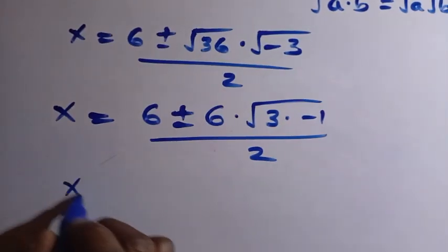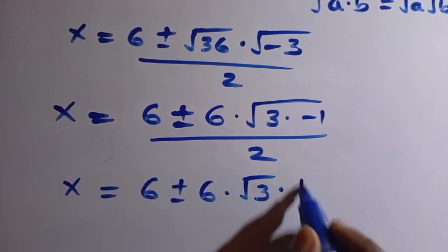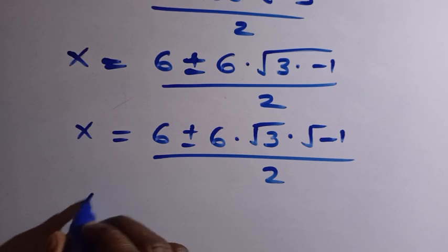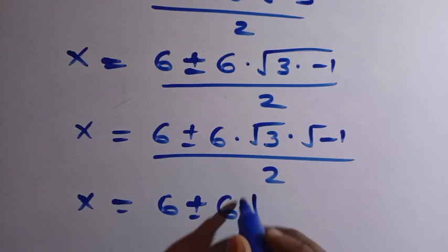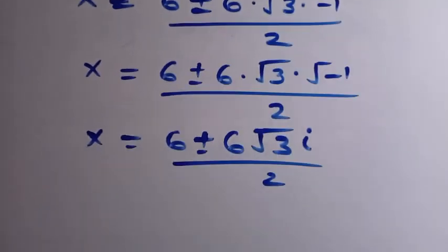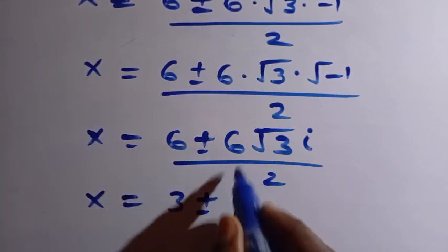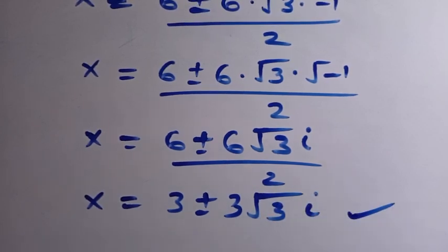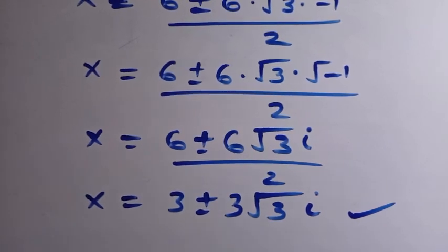So x equals 6 plus or minus 6 times square root of 3 times square root of minus 1, divided by 2. Since square root of minus 1 equals i, we have x equals 6 plus or minus 6 root 3 i, divided by 2. Dividing through by 2, x equals 3 plus or minus 3 root 3 i. These are the two solutions for x.